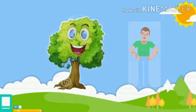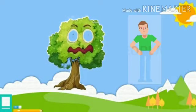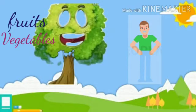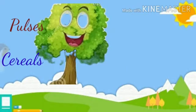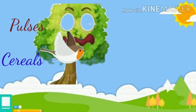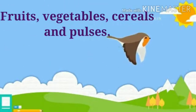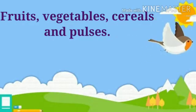Hi Raju, how are you? Can you tell me what are the things I give to you? Yes, dear plant, you give so many things — fruits, vegetables, cereals, pulses. So, dear children, plants give us fruits, vegetables, cereals and pulses.